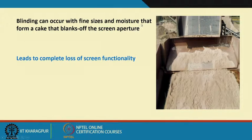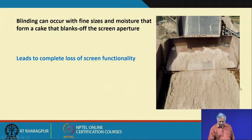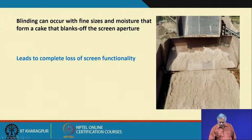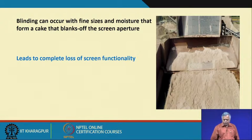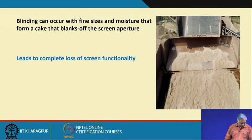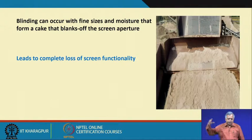Fine particles can completely choke the passage of the screen surface — this is called blinding. Blinding occurs with fine sizes and moisture that form a cake blanking off the screen aperture, creating an impervious surface with no screening — material going in and out through overflow, a complete loss of screen functionality. In modern practice, cameras and image processing can be installed for size analysis of oversize and undersize to monitor whether the material surface is clogged and calculate screen efficiency.